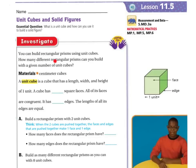You can build rectangular prisms using unit cubes. How many different rectangular prisms can you build with a given number of unit cubes? A unit cube is a cube that has a length, a width, and a height of one unit. Here's one unit cube — we have a face, an edge, and vertices.